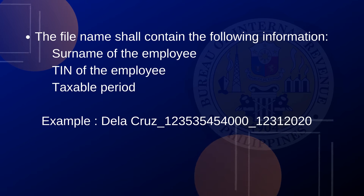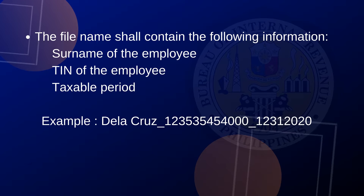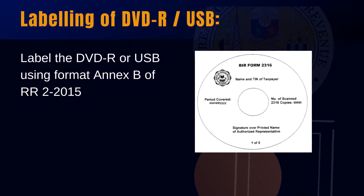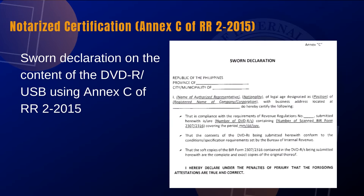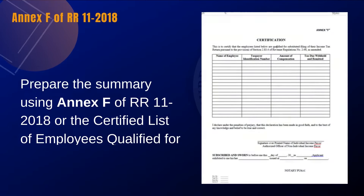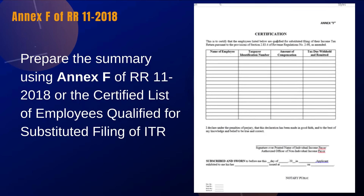The file names shall contain the following information: surname of the employee, TIN of the employee, and taxable period. Label the DVD or USB using format Annex B of RR2-2015. Also prepare a notarized certification as to the content of the DVD or USB using the sworn declaration format found in Annex C of RR2-2015. Now prepare the summary using Annex F of RR11-2018, or the certified list of employees qualified for substituted filing of ITR.